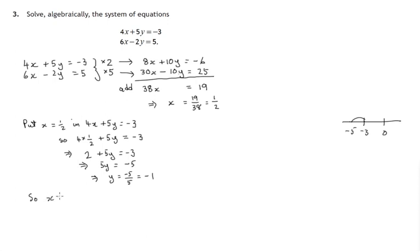So we appear to have found the two values for the variables: x equals a half and y equals negative 1. And at this stage, you would be wise to check that your answer makes sense. And since we used 4x plus 5y equals negative 3 in the calculation, let's try the other equation.